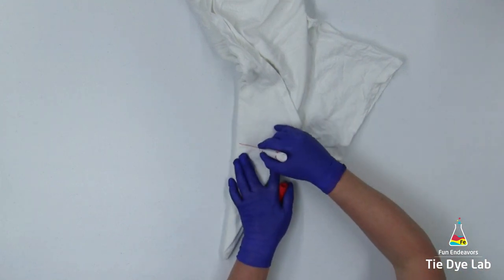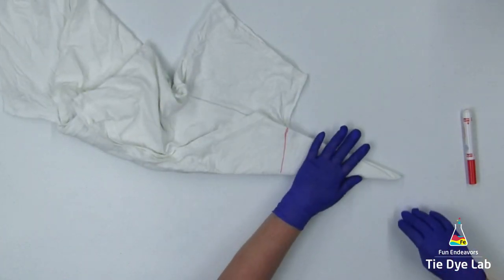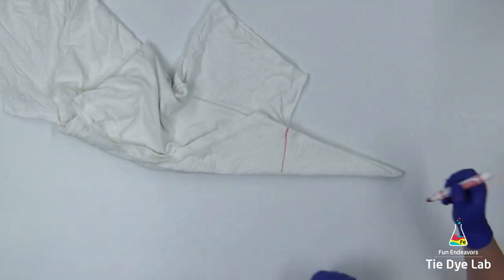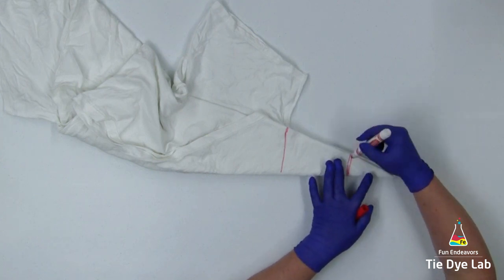Using a washable marker, I'm going to mark where the armpit of the shirt is, just so that I make sure I don't extend the sunflower beyond that area. I'm also going to mark where I'd like the center of the sunflower to be.